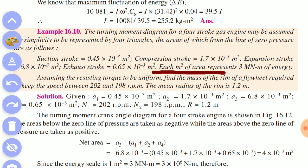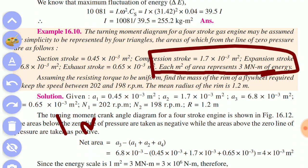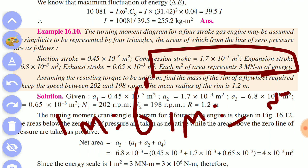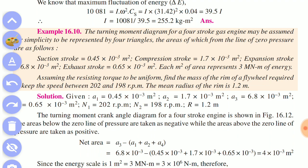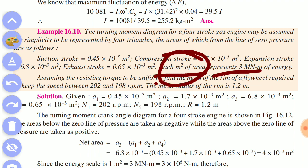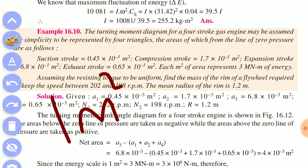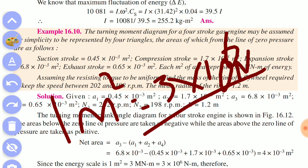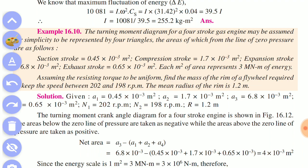Compression stroke 1.74×10⁻³ meter square, expansion stroke 6.81×10⁻³ meter square, and exhaust stroke 0.65×10⁻³ meter square. Each meter square of area represents three mega newton meter, that is 3×10⁶ newton meter.